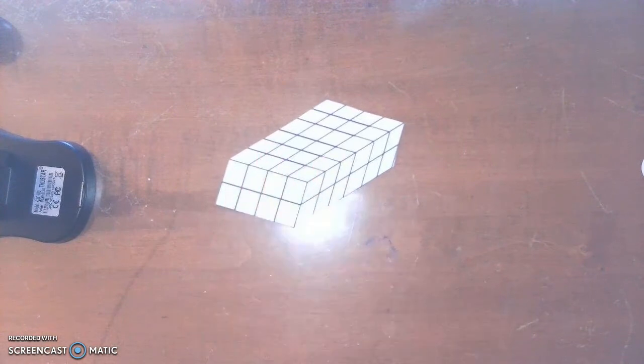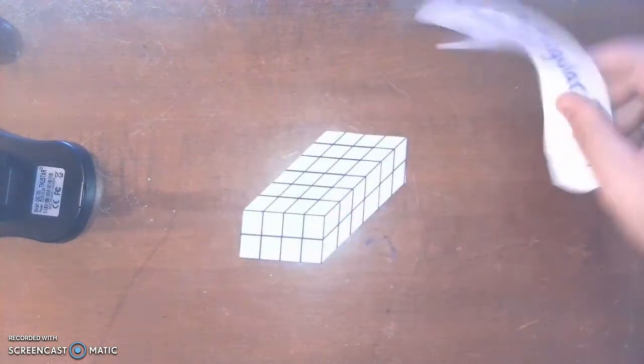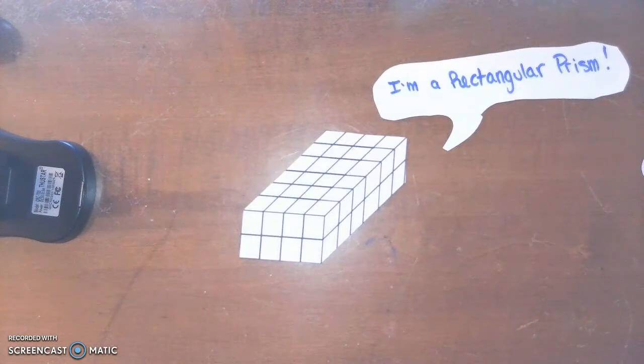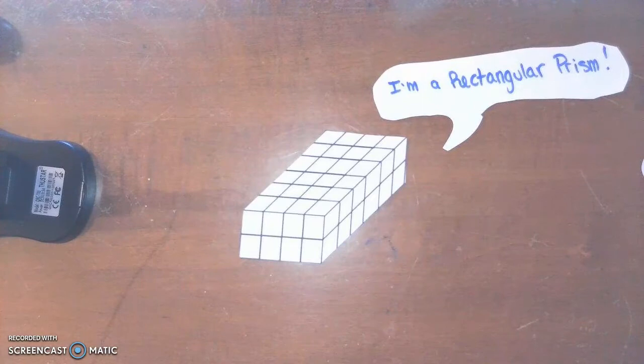So here is a picture of a rectangular prism, and a rectangular prism is a three-dimensional shape that is composed of six rectangle faces.